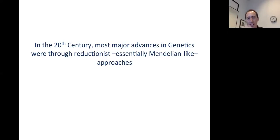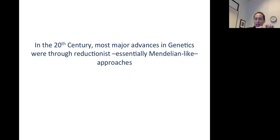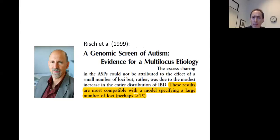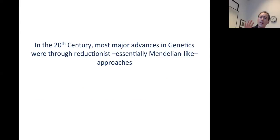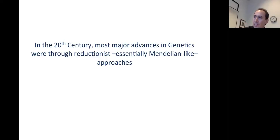After Fisher's work, most of the major advances in genetics in the 20th century really came through reductionist approaches where people are thinking about genetics more in a Mendelian framework, thinking about the behavior of individual genes producing phenotypes. With the advent of molecular work, there was a huge amount of work to understand the exact nature of the molecular links between a change in the genome and a change in phenotype. Quantitative genetics was to some extent pushed to the side, except in fields like animal breeding and plant breeding.